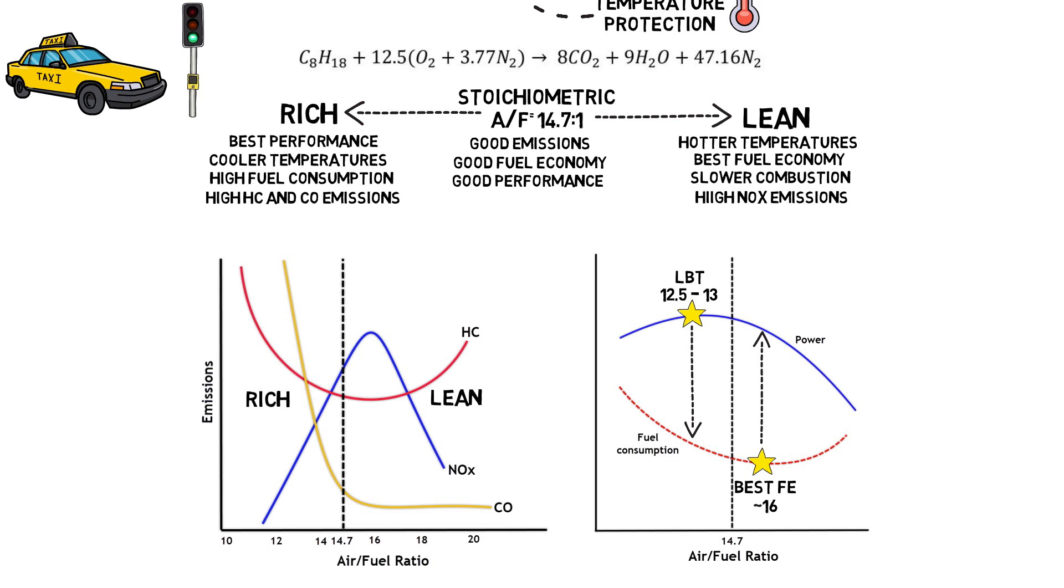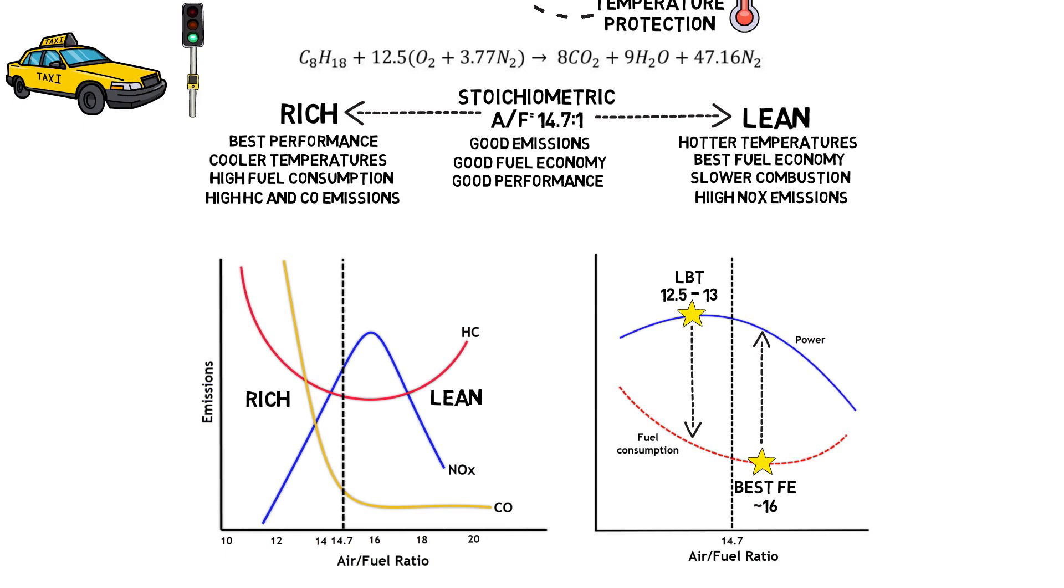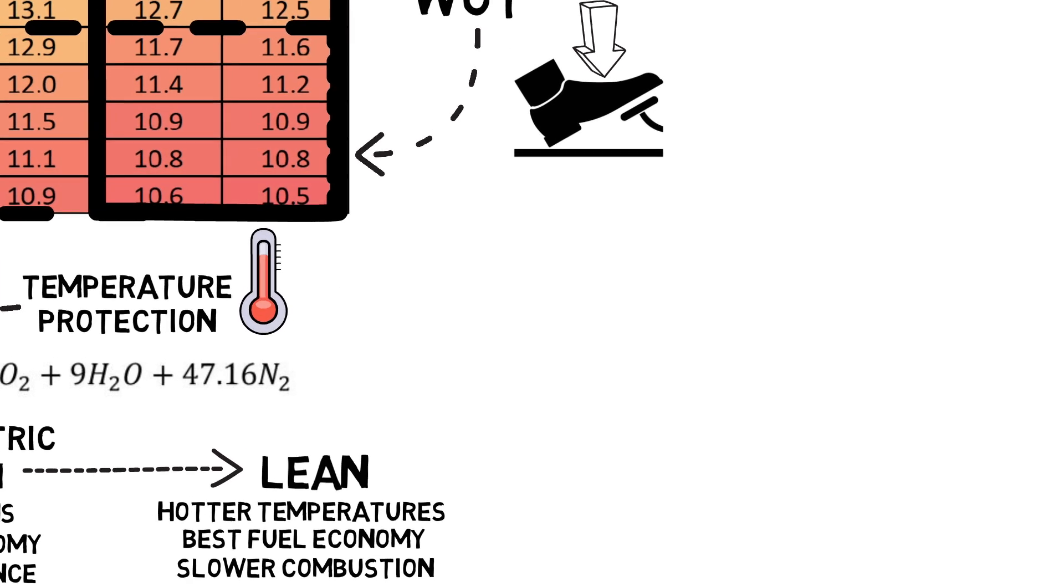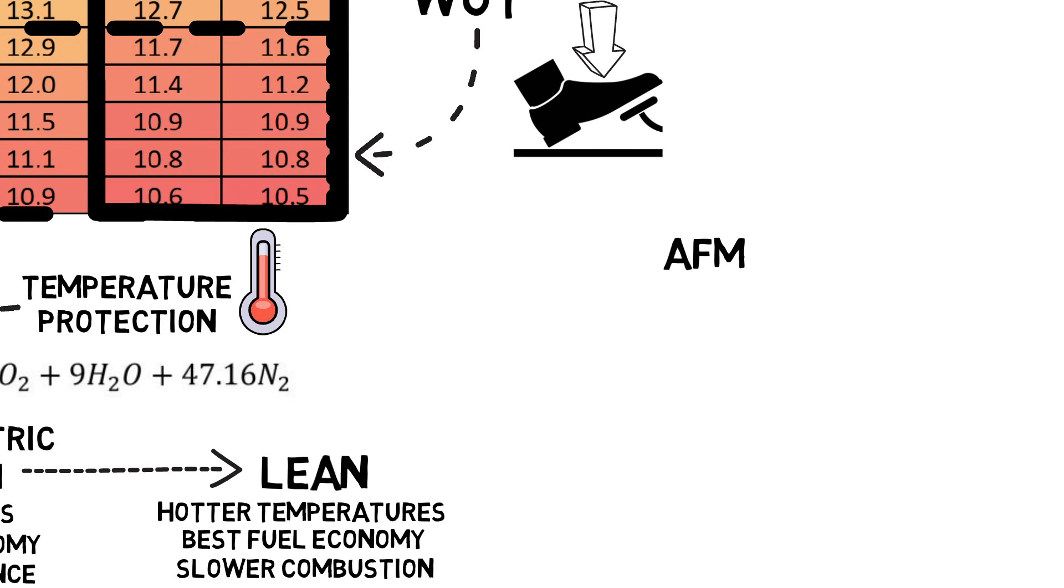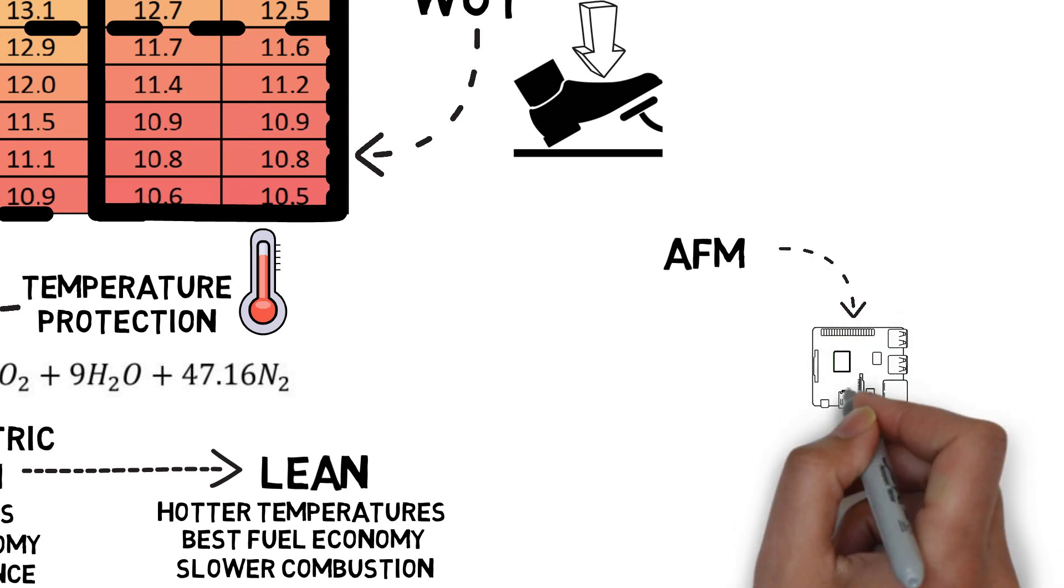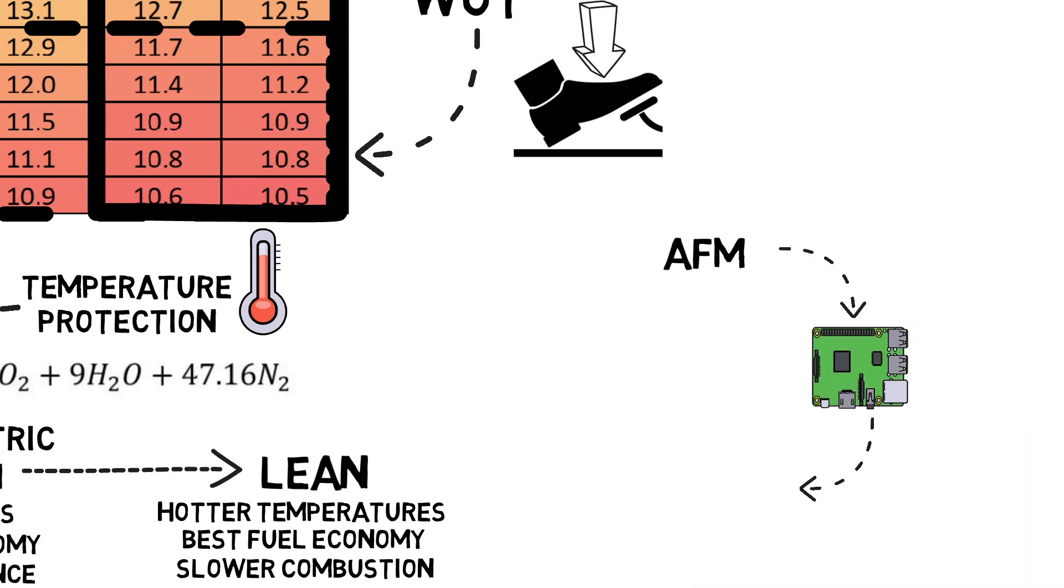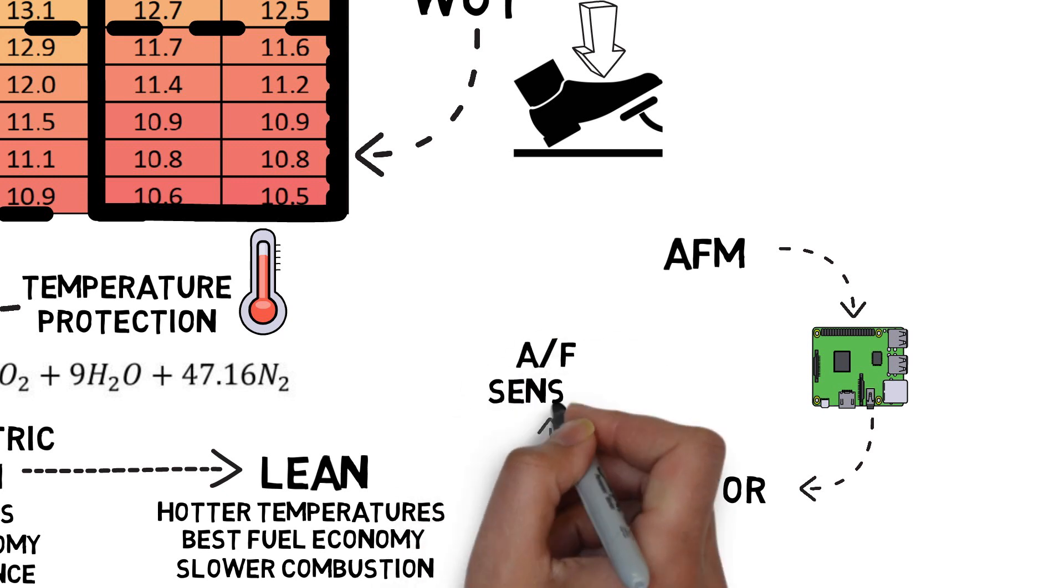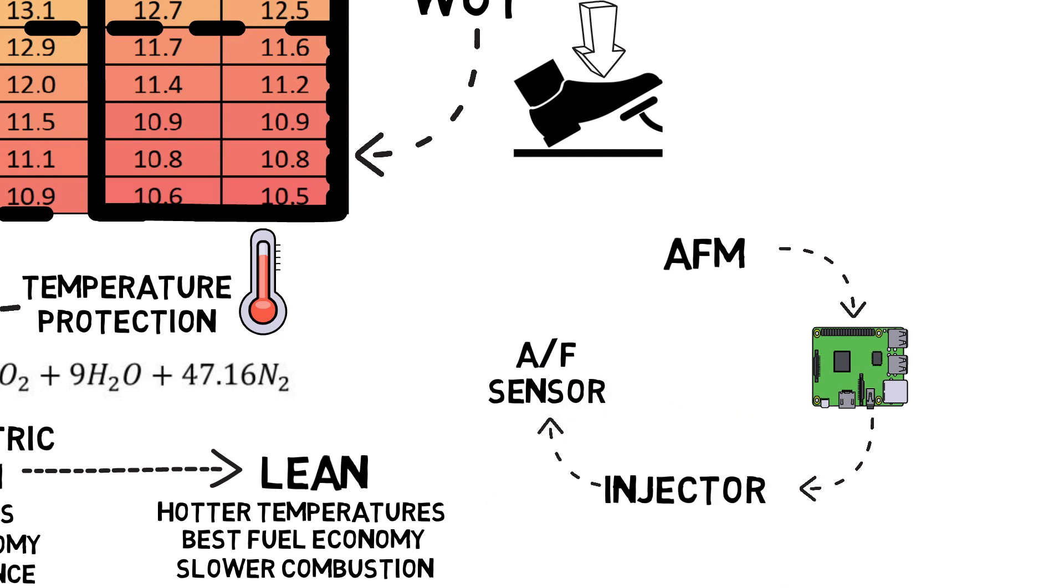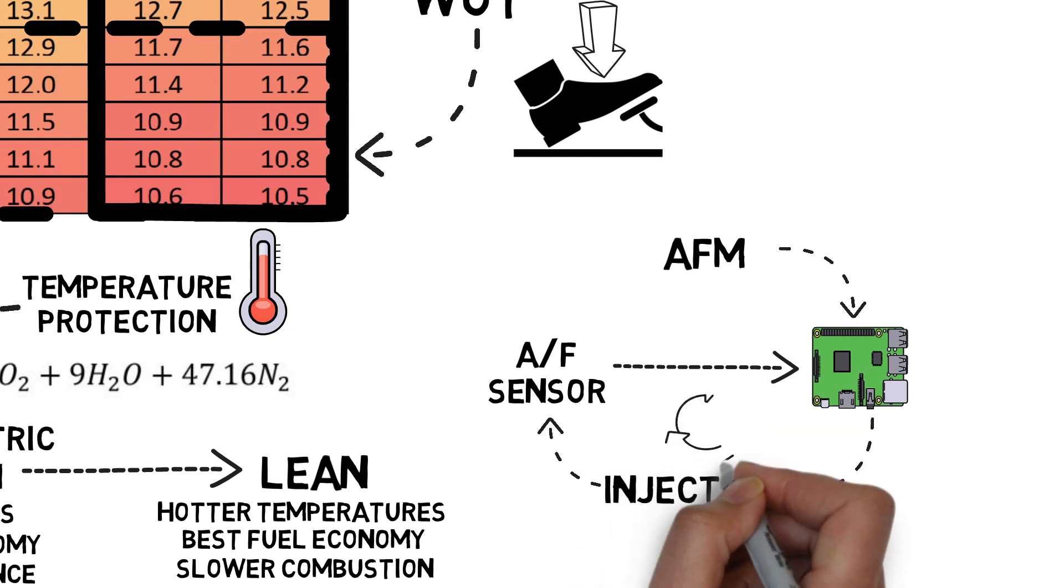The way the engine ensures that it's achieving the target air-fuel ratio is through sensor feedback. As the engine pulls in air, it's measured by an airflow meter. Next, the ECU calculates the injector pulse to achieve the optimal enrichment. While the combustion gases flow through the exhaust pipe, an air-fuel sensor measures the oxygen content and sends the information back to the ECU. The ECU then corrects the injector opening duration in a continuous repeating process.